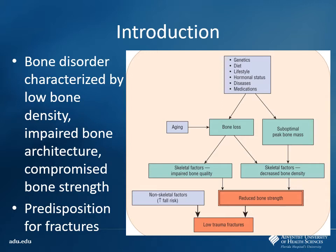Why is osteoporosis bad? The bones become brittle. Patients get up in the middle of the night to use the restroom, they fall, and they have a fracture. There's a lot of morbidity and mortality associated with hip fractures, vertebral fractures, femur fractures — it's very difficult for older patients to regain function after a break like that. So we want to focus on preventing the disease first, and when treating it, get bone mineral density back up to prevent a fracture.